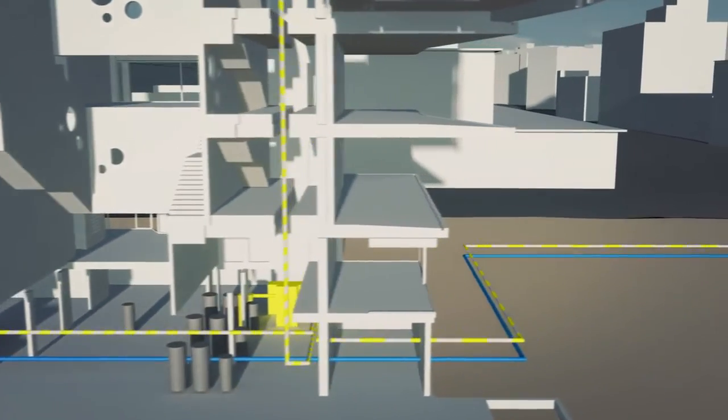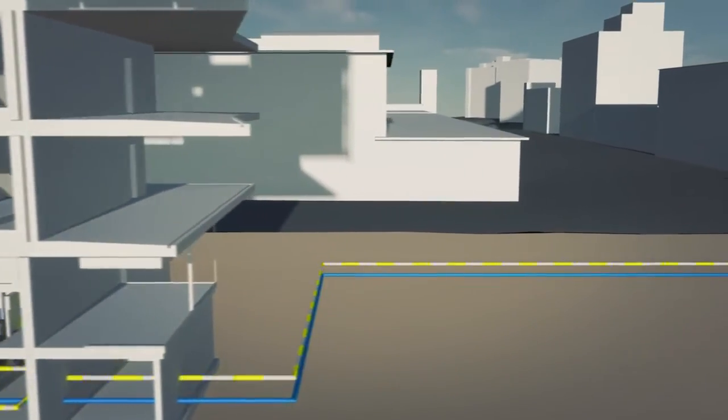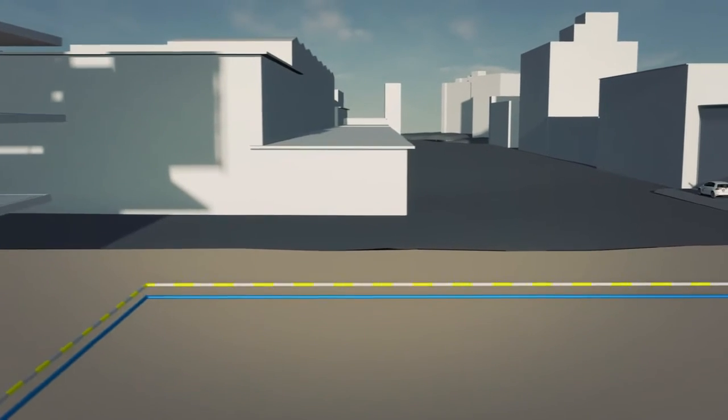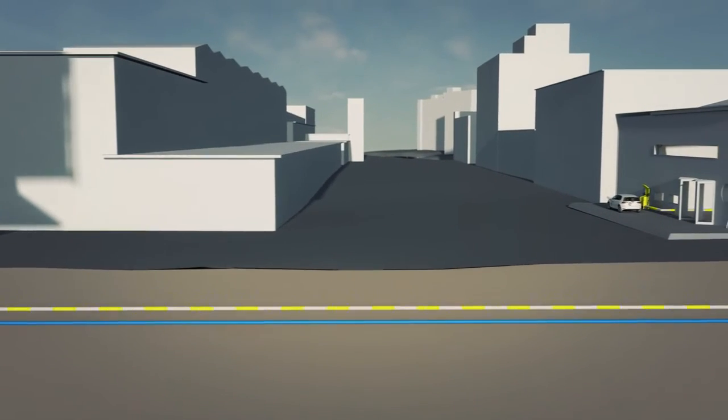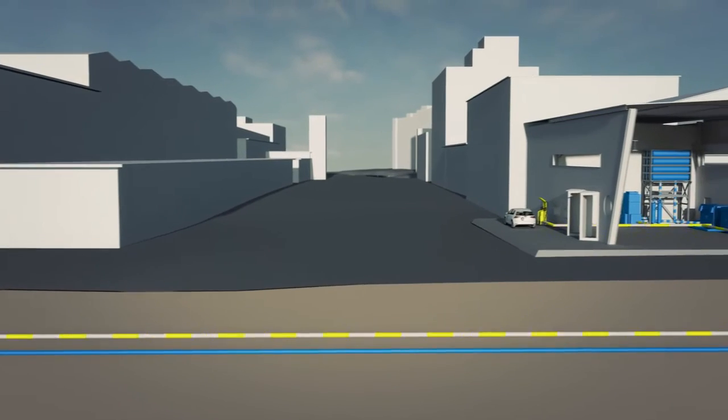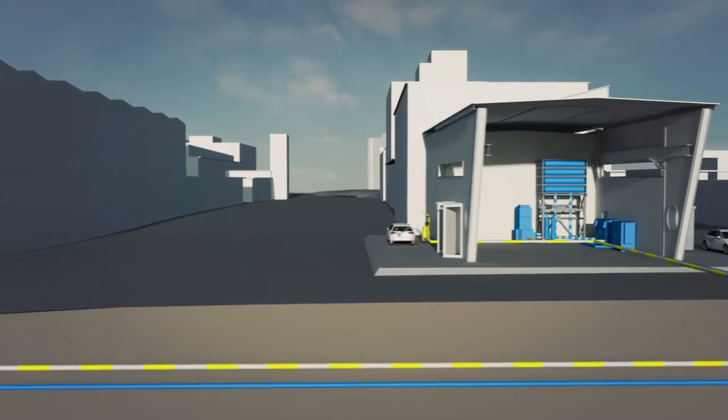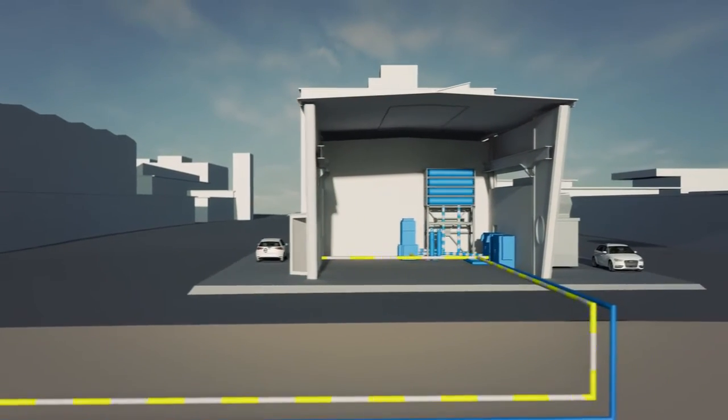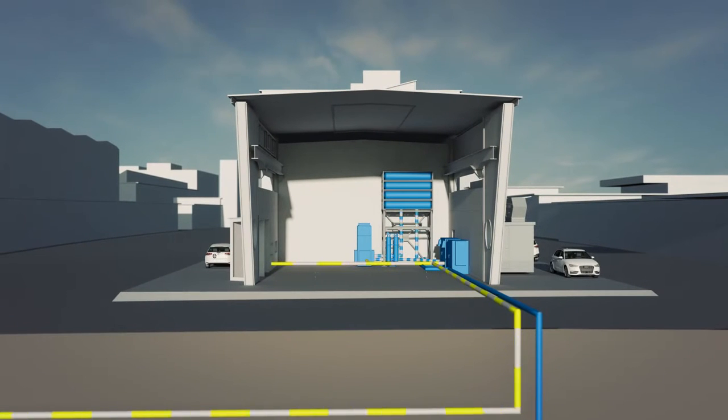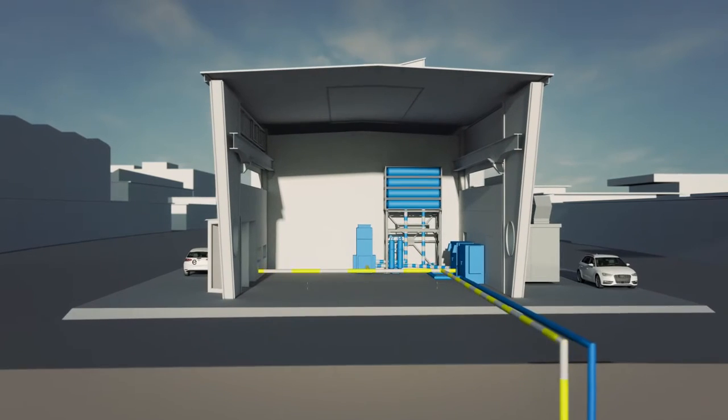To store the electricity in the long run, however, it can be converted into hydrogen or methane. This takes place at the mobility demonstrator MOVE on the EMPER campus. Hydrogen is produced from excess electricity via electrolysis and stored in special tanks.